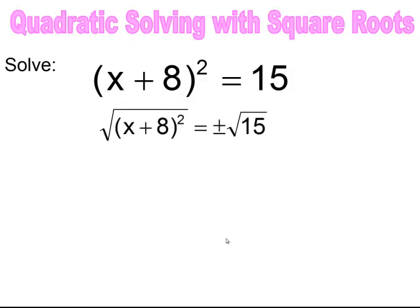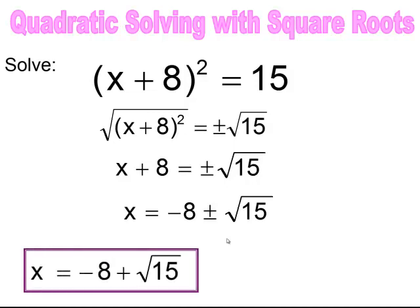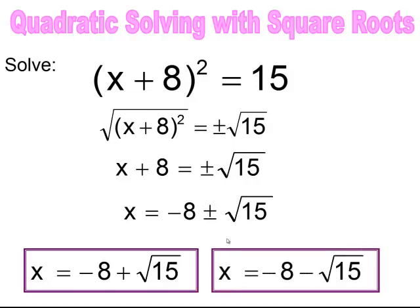In this practice problem, you square root both sides. 15 does not simplify, so it stays under the radical. Don't forget — you're going to have two separate answers: the positive square root of 15 and the negative square root of 15. So x plus 8 equals plus or minus the square root of 15. To solve for x, subtract 8 from both sides: x equals negative 8 plus or minus the square root of 15, which can also be written as two separate answers.